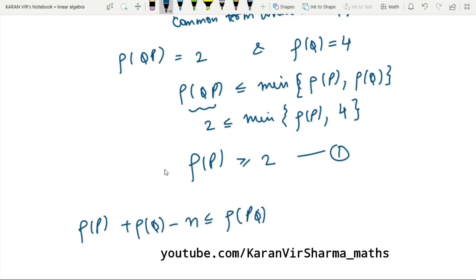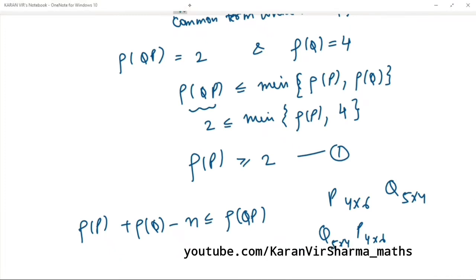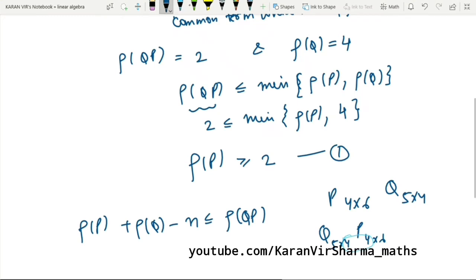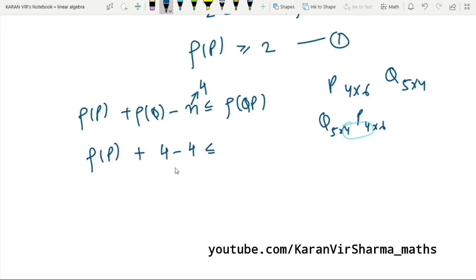Now, the P matrix given in our question has size 4×6 and Q is given as 5×4. While doing the product QP, Q is 5×4 and this is 4×6. So what is the common in both of these terms? That is 4, so n would be 4 here. That was the point which I was mentioning. So rank of P, which we have to find, rank of Q already given in our question which equals 4 minus 4 is less than the rank of QP which is again given as 2. So the rank of P is less than or equal to 2.